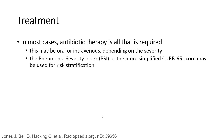Treatment: In most cases, antimicrobial therapy is all that is required. This may be oral or intravenous depending on the severity. The pneumonia severity index, or the more simplified CURB-65 score, may be used for risk stratification.